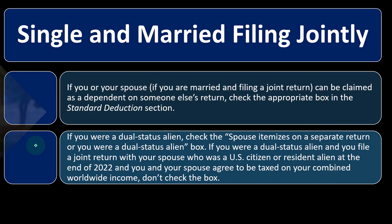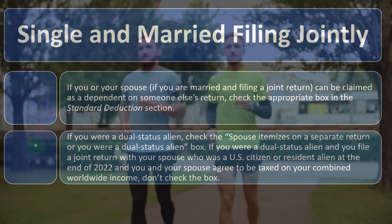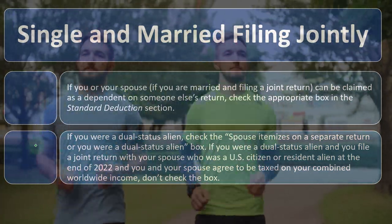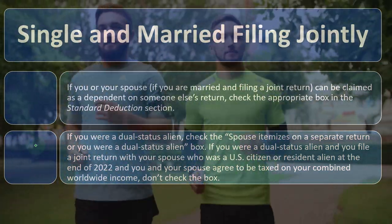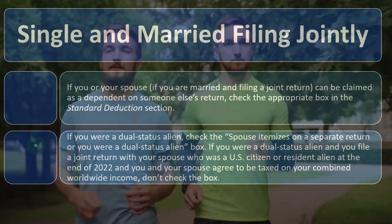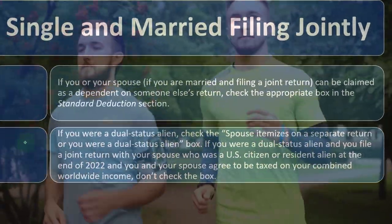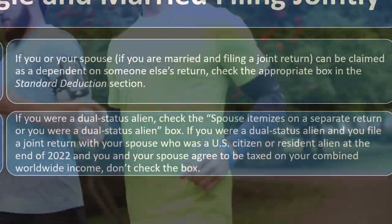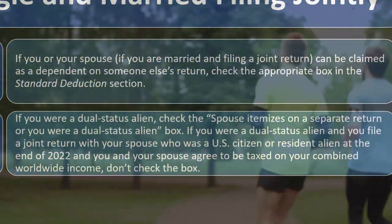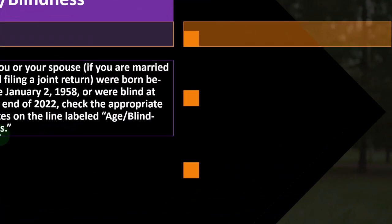If you were a dual-status alien and you file a joint return with your spouse who was a US citizen or resident alien at the end of 2022, and you and your spouse agree to be taxed on your combined worldwide income, don't check the box.